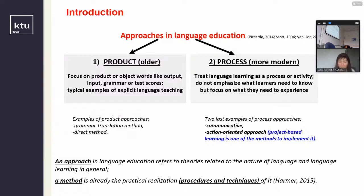Let me start from very general ideas in language education. As NFL legend Jeremy Harmer states, an approach in language education refers to theories related to the nature of language and language learning in general, and the method is the practical realization — procedures or techniques of any approach. The earliest approaches such as grammar translation method, direct method, and audio-lingualism focused on repetition of forms, memorization, and reading of texts. They were typical examples of explicit language teaching and represented product approaches, which treated language as an object of learning and did not focus on learners learning the language.